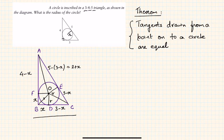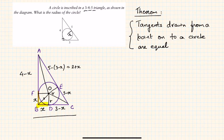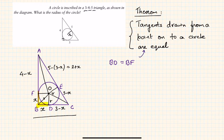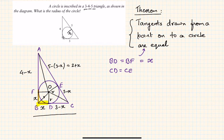We can also say that BD and BF are tangents to the circle from the same point B, so BD equals BF — I have labeled that length as x. Similarly, CD equals CE by the same theorem, and BD equals BF, which I've assumed to be x.